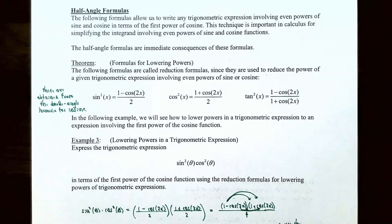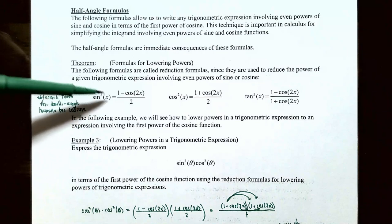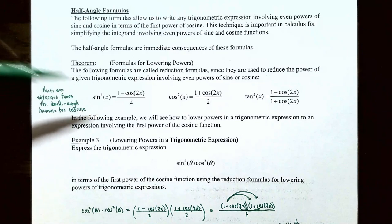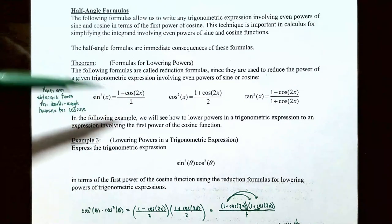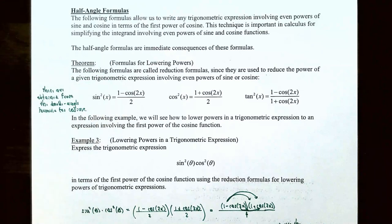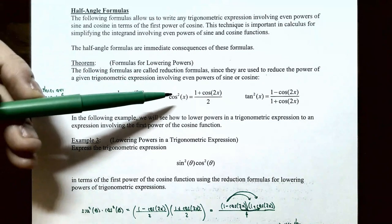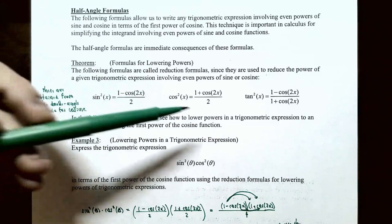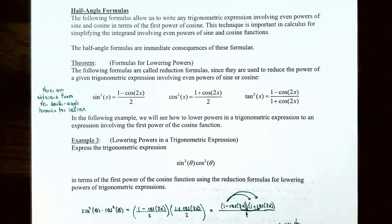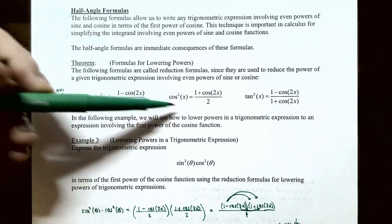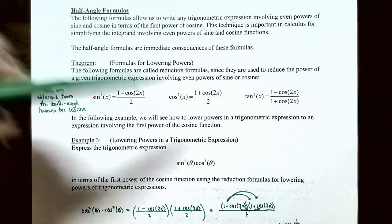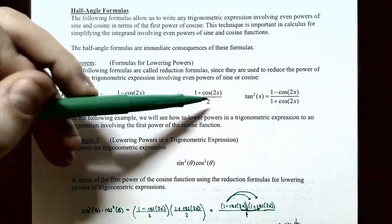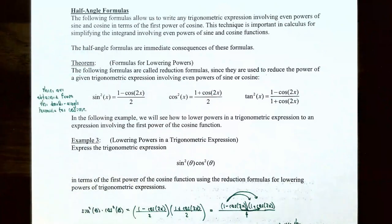It's called the reduction formula because you have sine squared on the left-hand side and on the right-hand side you have cosine to the first power — but it's cosine of a double angle, cosine of 2x. Cosine squared of x is equal to (1 + cos(2x)) / 2. Again it's a reduction formula: you start with cosine squared of x and reduce the power to cosine to the first power of the double angle 2x.